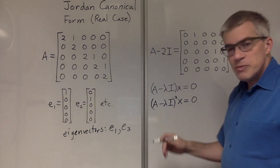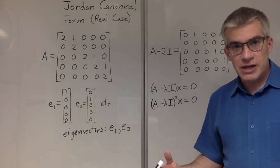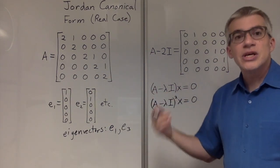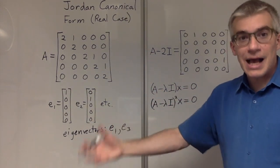So what we're going to make is called a generalized eigenvector. And when you perform this operation, it turns it into an eigenvector.